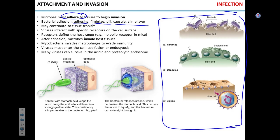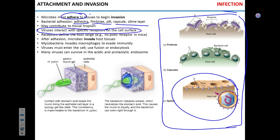For viruses, which are obligate intracellular pathogens, adhesion to the cell requires interaction with a specific receptor. While for bacteria the way they adhere may define which tissues they infect, for viruses the presence or absence of the receptor is the determinant for tissue tropism — meaning which tissue or organ the virus preferentially infects.